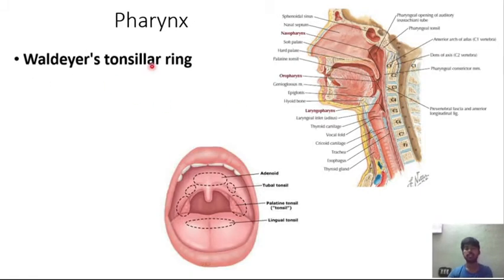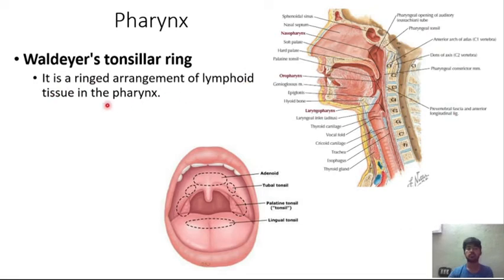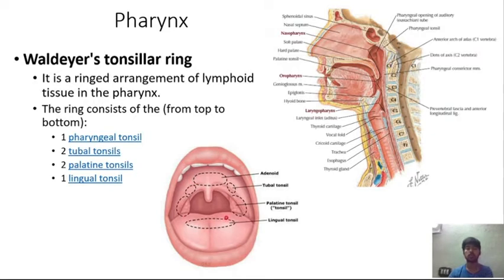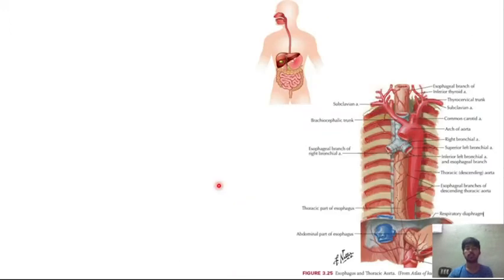The Waldeyer's ring is a ring arrangement of lymphoid tissue in the pharynx. The ring consists of one pharyngeal tonsil (also called adenoid), two tubal tonsils, two palatine tonsils present between the palatoglossal and palatopharyngeal arches, and one lingual tonsil present below the tongue. All these tonsils form a ring-like structure, which is why it is called Waldeyer's ring.